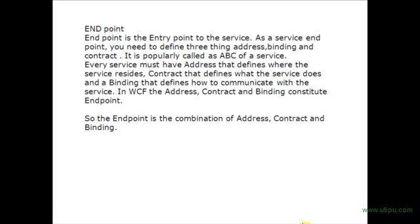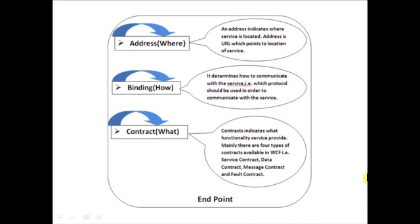In WCF, Address, Binding, and Contract together constitute the endpoint. This is a pictorial representation of ABC. Address indicates where the service is located — it is the URL which points to the location of the service. Binding determines how to communicate with the service, that is, which protocol should be used.